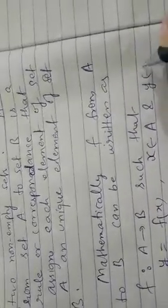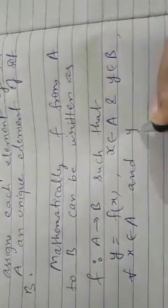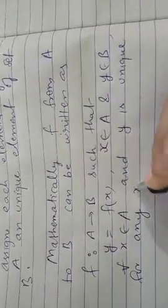Mathematically, f from set A to set B can be written as f: A to B such that y equals f(x). Here x belongs to set A and y belongs to set B. For every x belongs to set A, y is unique for any x belongs to A.